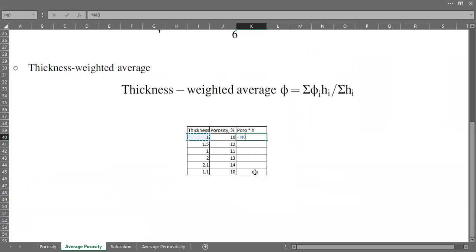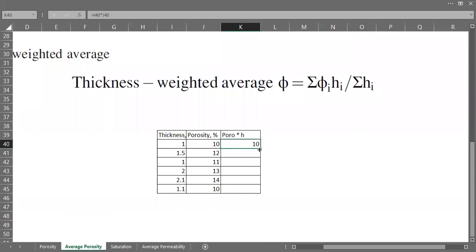So we have porosity multiplied by thickness. The sigma symbol is the summation, so if you do summation it is: sum of porosity multiplied by thickness.